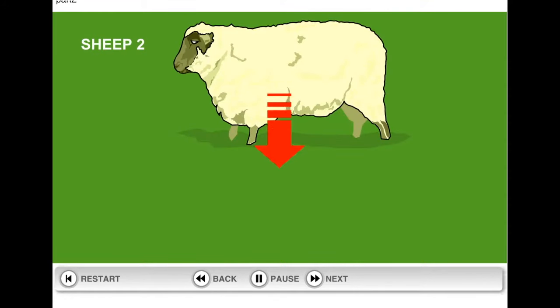Meanwhile an egg or ovum was removed from Sheep 2, a black-faced female Scottish ewe, to be prepared for implantation.